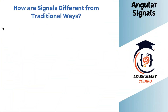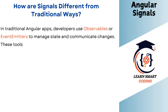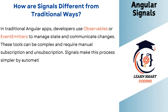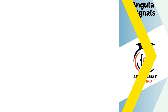How are signals different from traditional ways? In traditional Angular apps, developers use observables or event emitters to manage state and communicate changes. These tools can be complex and require manual subscription and unsubscription. Signals simplify this process by automatically keeping track of changes.